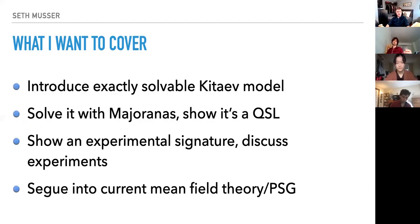So that's a review of last time. What I want to cover this time: we're going to introduce a really incredible model — the exactly solvable Kitaev model. Then we're going to solve it with Majoranas, and we're going to see that it's a quantum spin liquid by our standards from last time. We'll look at some experimental signatures and actual experiments, and hopefully we'll get to the projective symmetry group.